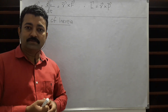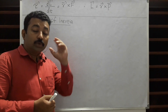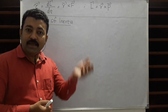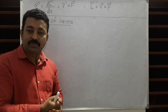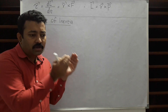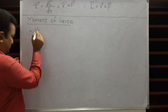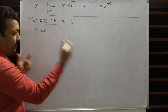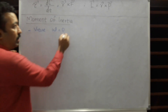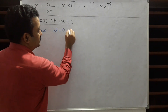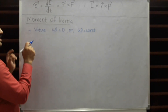Inertia in translation is defined as the inherent property of a particle or system by virtue of which it opposes or tends to oppose the state of rest or motion along a straight line with uniform velocity unless acted upon by an external force. Similarly, rotational inertia is the property by virtue of which a system or particle opposes the state of rest — where omega equals zero — or rotation with constant angular velocity, unless acted upon by an unbalanced external torque.